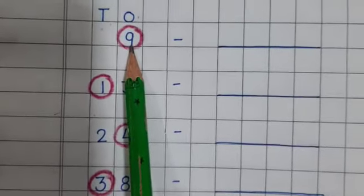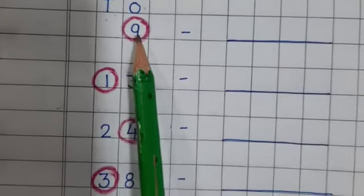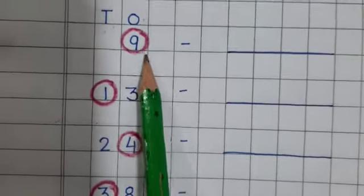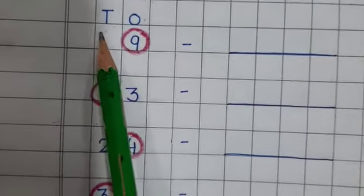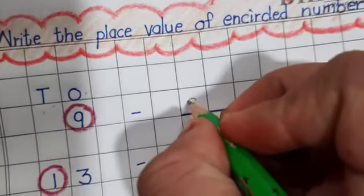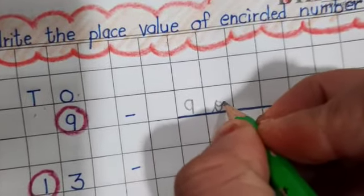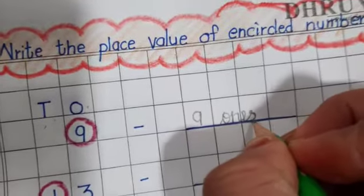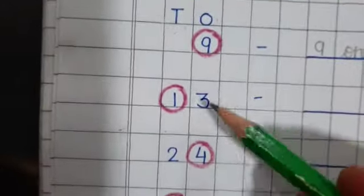Which number is this? 9. Around the 9 there is one circle. So we will write the place value of number 9. Where is 9? Under the ones place. So we will write: 9 ones.